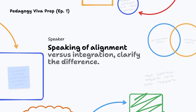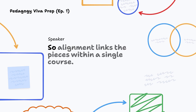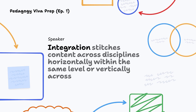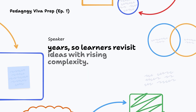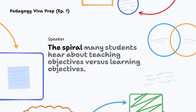Speaking of alignment versus integration — what's the difference? Alignment links the pieces within a single course. Integration stitches content across disciplines — horizontally within the same level, or vertically across years — so learners revisit ideas with rising complexity: the spiral.